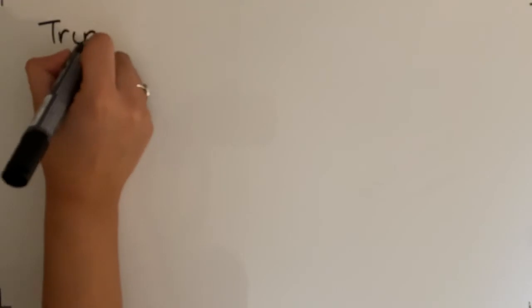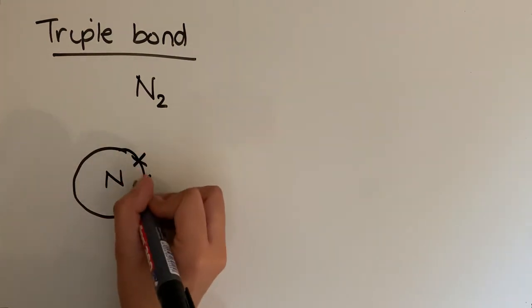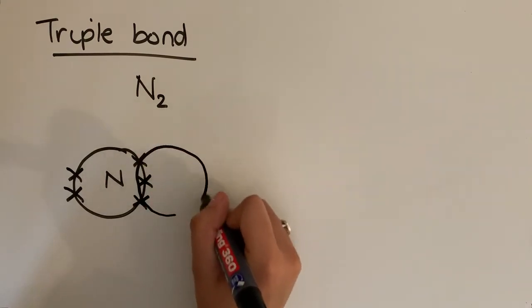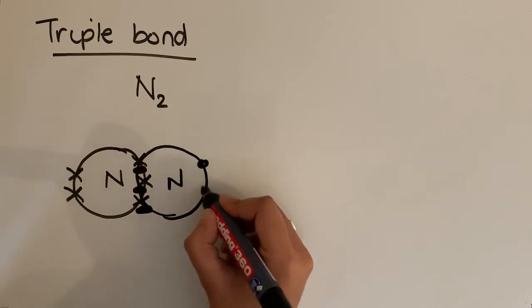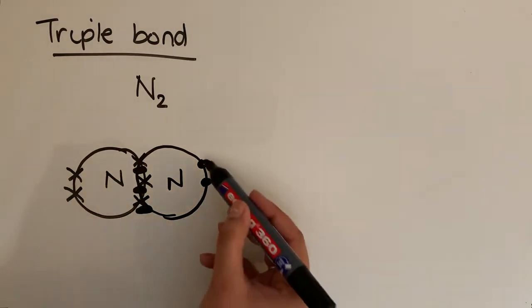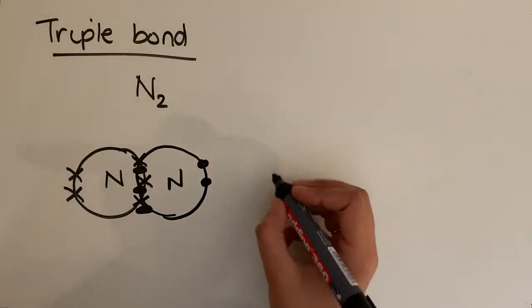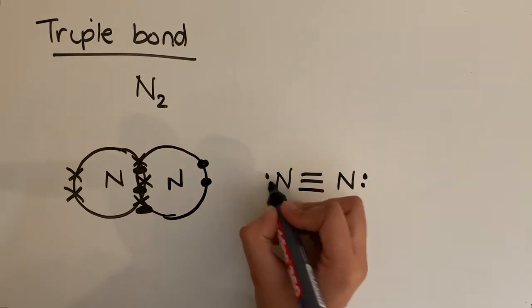Another type of bonding is where you have three bonds — a triple bond. The best example is nitrogen, N2, which is diatomic. Nitrogen is group five, so it has five outer electrons. When two nitrogens bond, each wants to gain three electrons, so they share three pairs of electrons, forming a triple bond. Both nitrogens end up with eight electrons, and each nitrogen also has a lone pair of electrons.